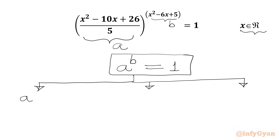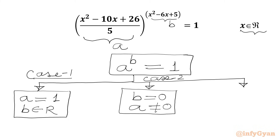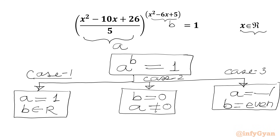Case number 1: if our base is 1 and our power is a real number, then we are going to get RHS 1. Case number 2: if our power is 0, but we have to make sure our base should not be 0, otherwise we will get 0 power 0, which is not defined. So in this case also we are going to get RHS 1. Third case: if our base is negative 1 and our power is an even number, then minus 1 with even power will give us 1, which is our RHS. Now we have to solve our equation under these 3 cases.